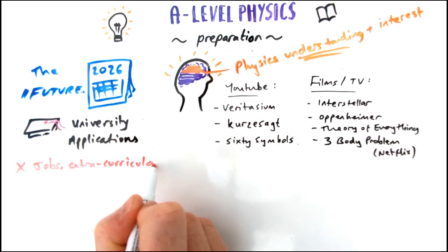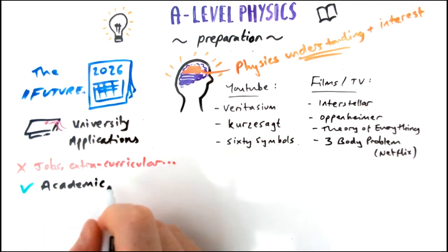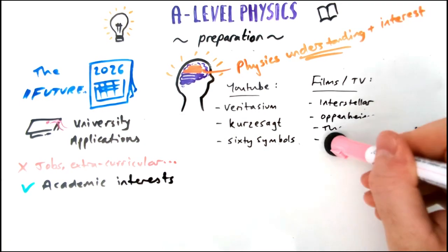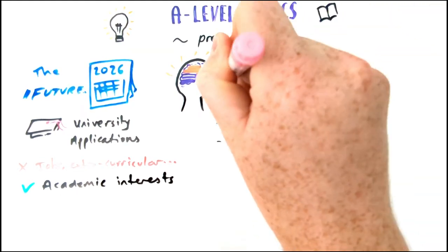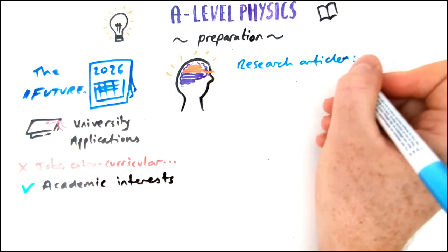If you're applying to a really academic course, like to do with physics or maths, they're going to look less at extracurriculars and more at academic interests. They're going to look for you, in your personal statement, to be talking about articles you read. For example, up-to-date physics in Physics World and The New Scientist.